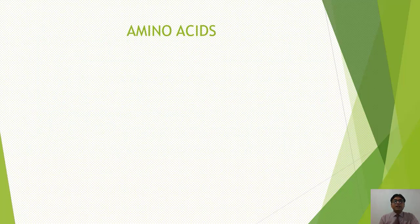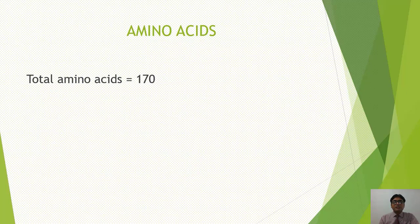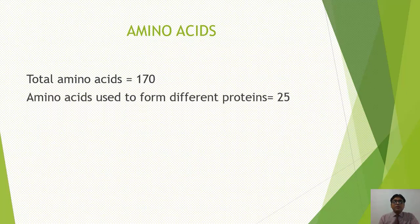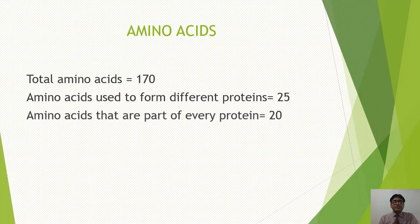Nature में total 170 amino acids present हैं। इन 170 amino acids में से 20 amino acids ऐसे हैं जो different proteins बनाने में use होते हैं। इसका मतलब है कि सब amino acids proteins में use नहीं होते। Amino acids independently भी body में function कर सकते हैं। और ये 20 amino acids ऐसे हैं जो हर protein का part हैं - human body में जितनी proteins हैं वो इन्हीं 20 types के amino acids के मिलने से बनी हैं।